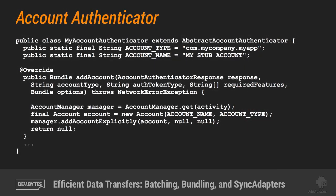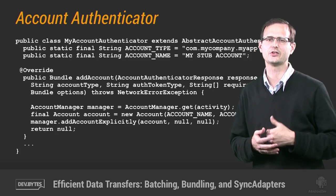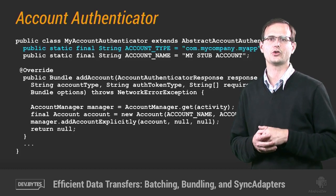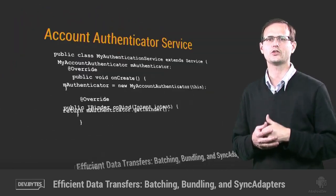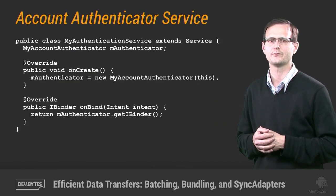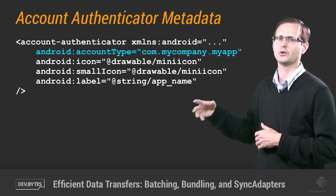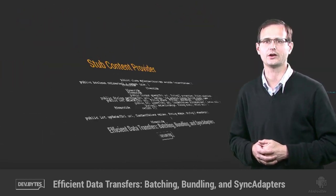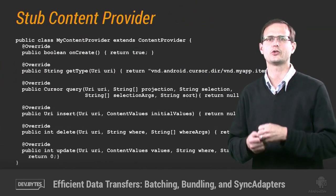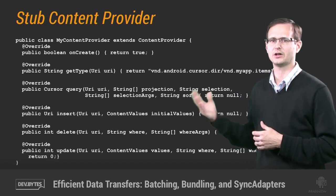In this boilerplate, you'll notice that I'm overriding the add account method. Here, you would typically ask the user to enter their authentication details for your service, but instead you could just create a new stub account and explicitly add it to the account manager. Take particular note of the account type you specify. Like the sync adapter, the account authenticator also needs a service from which to run, so create a new service that binds to your implementation. Then create a metadata file for your account authenticator — note in particular the account type, which must match the one you provided earlier. The sync adapter also requires a content provider. As described earlier, a content provider is an effective and efficient way to store the data you're planning to transfer, but if you prefer not to use one, you can create a stubbed out implementation.